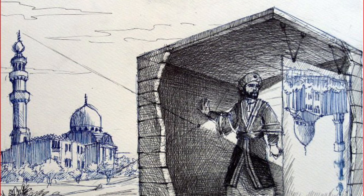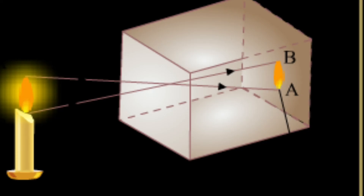Early models were dark rooms and tents, usually used by artists until around the 18th century, when they became portable. Another experiment Alhazen conducted involved watching the half-moon shape of the sun during a solar eclipse. He also did this in a dark room, watching the wall opposite an obscured window with a pinhole in the curtain.